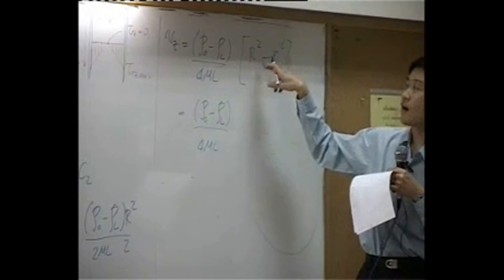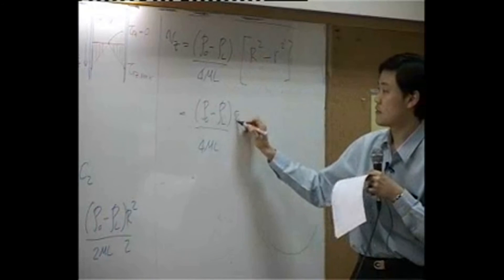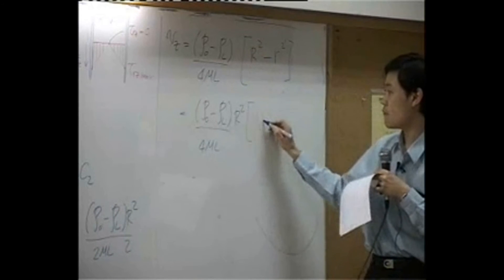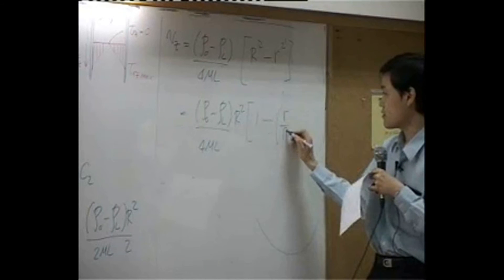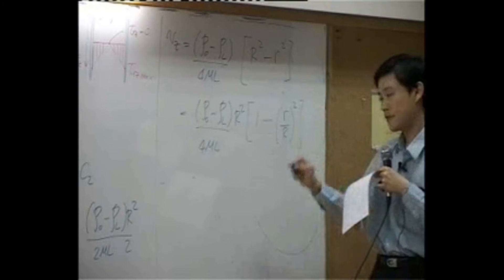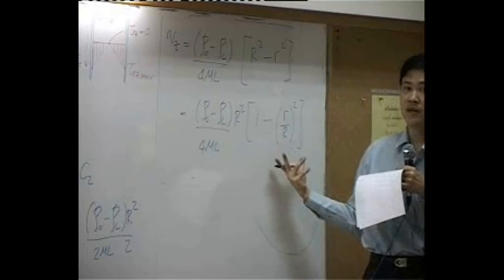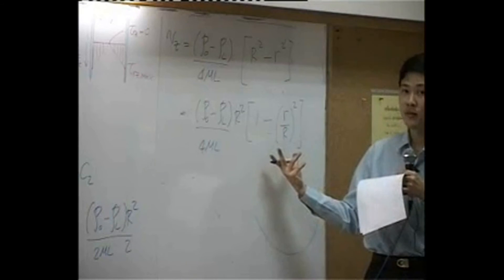I'm going to take R squared out. Out here, inside will be 1 minus r divided by capital R squared, so turn this term to be dimensionless.